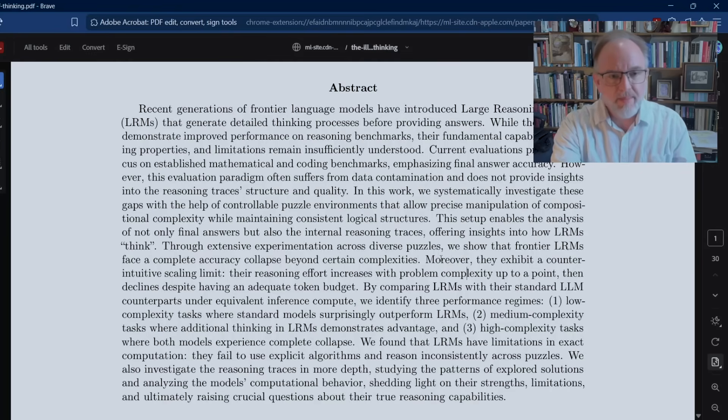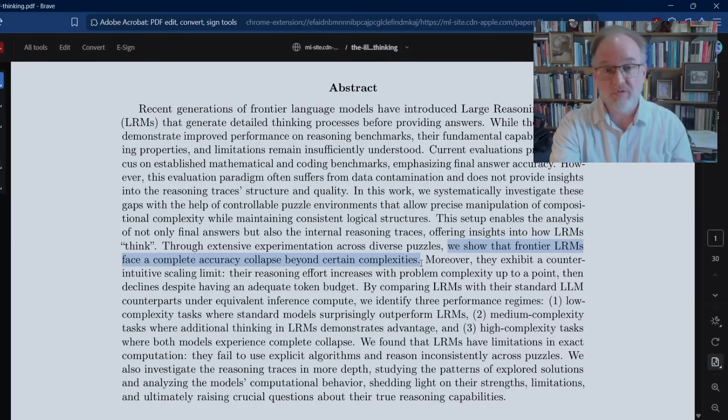Through extensive experimentations, this is one of their key findings: We show that frontier LLMs, as of mid-2025, experience complete accuracy collapse beyond certain complexities. Once you get up to a certain level of complexity, for Tower of Hanoi it looks like it's about eight disks, accuracy goes to zero. Even the most advanced AIs cannot solve the puzzle as they've structured it here. So even the most advanced models seem to hit a ceiling beyond which they just don't get it. They cannot generalize more completely to a solution.